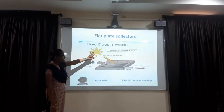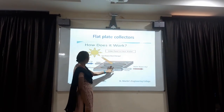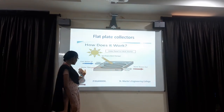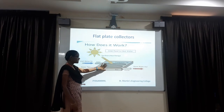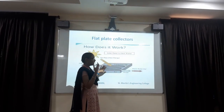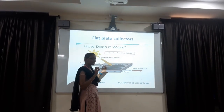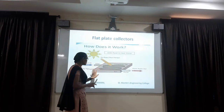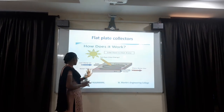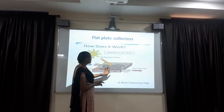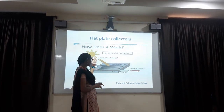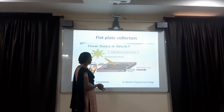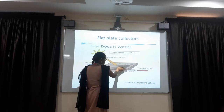This is the flat plate collector. The sun is directly connected to the water pipe. This is the solar panel - the total solar panel is placed over the water pipe. The water is heated by using the sun. This is the inlet and this is the outlet. Water enters at the inlet and after being heated, exits at the outlet.